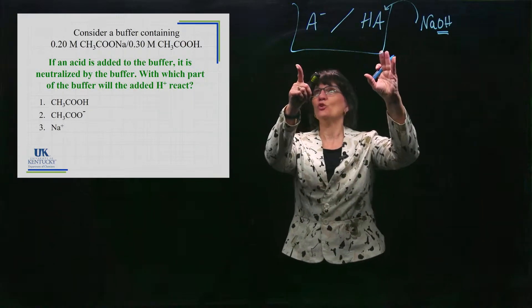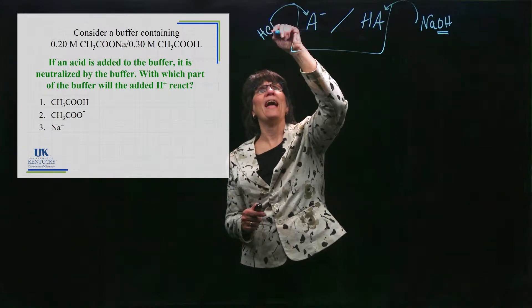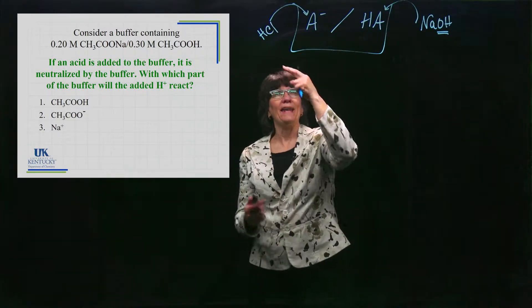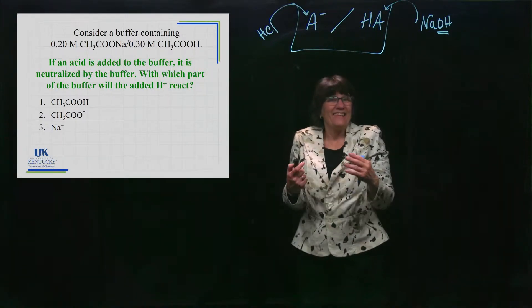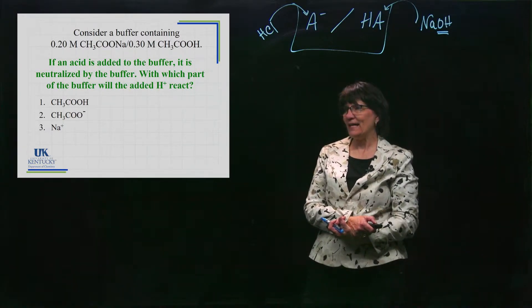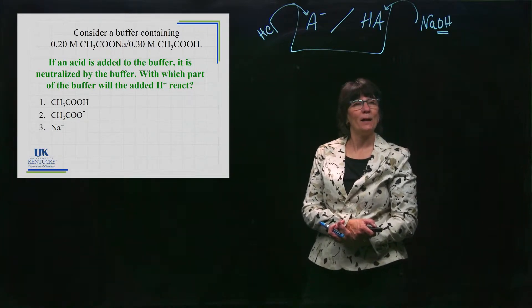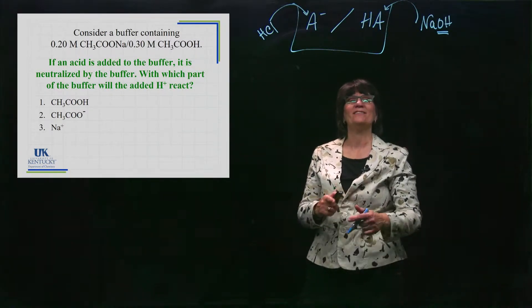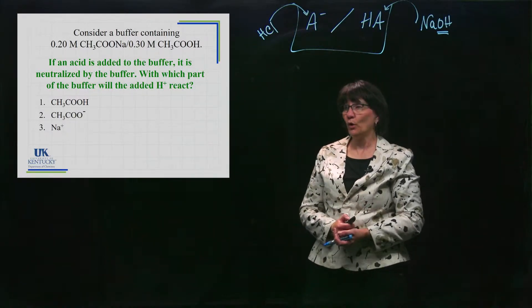Let's say that we take this solution, and instead of adding a base, we come along and we add some sort of acid to it. When we add an acid to it, we're going to be adding some H+ to there. When you add H+ in there, that's the acid. What of that buffer is there to neutralize that acid? It would be the base form. Acids get neutralized by bases. So the base form is the CH3COO-, that is the conjugate base of the weak acid.